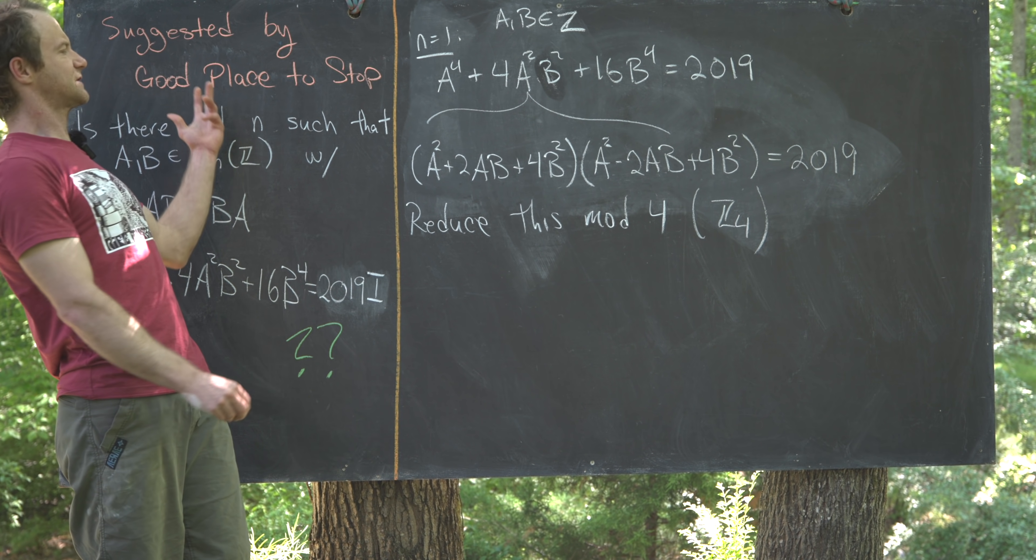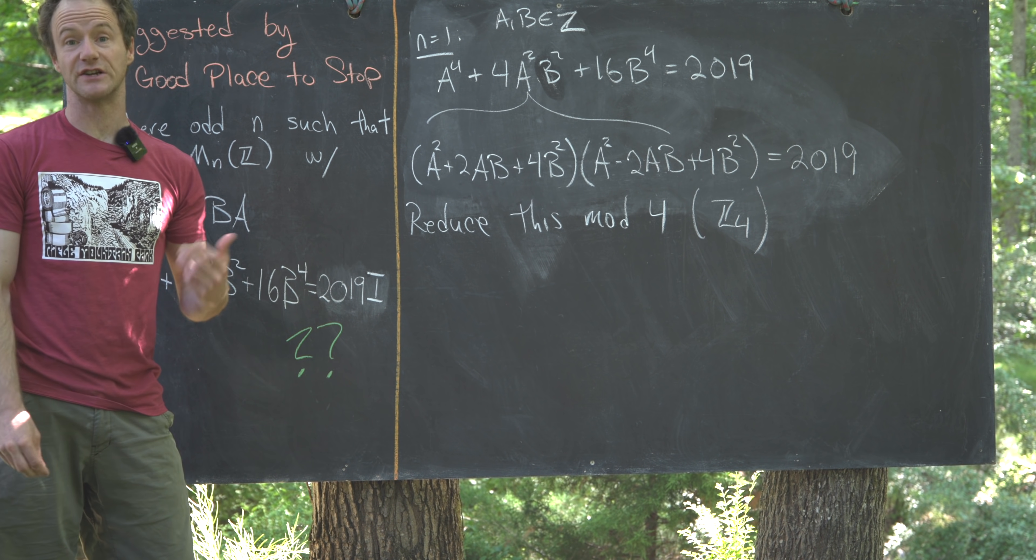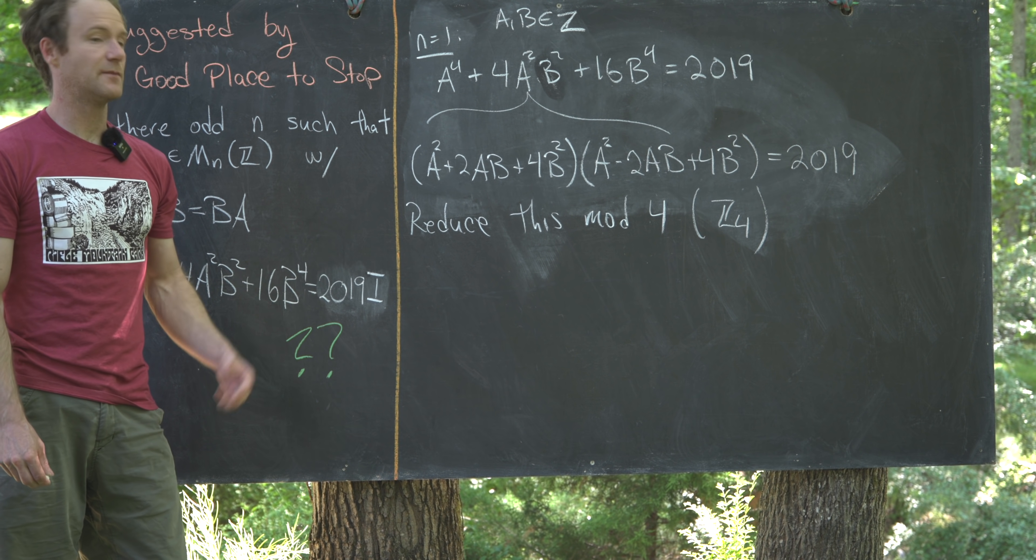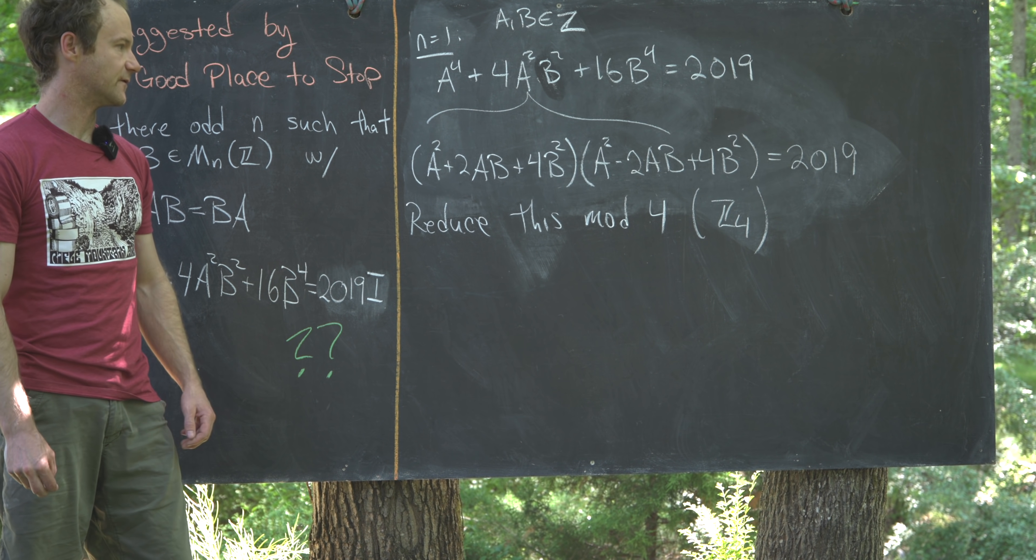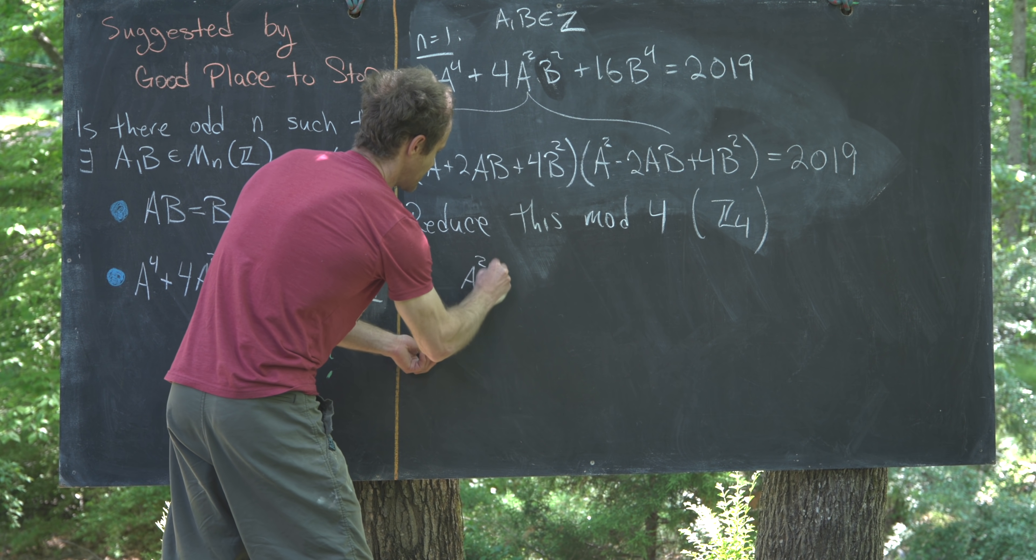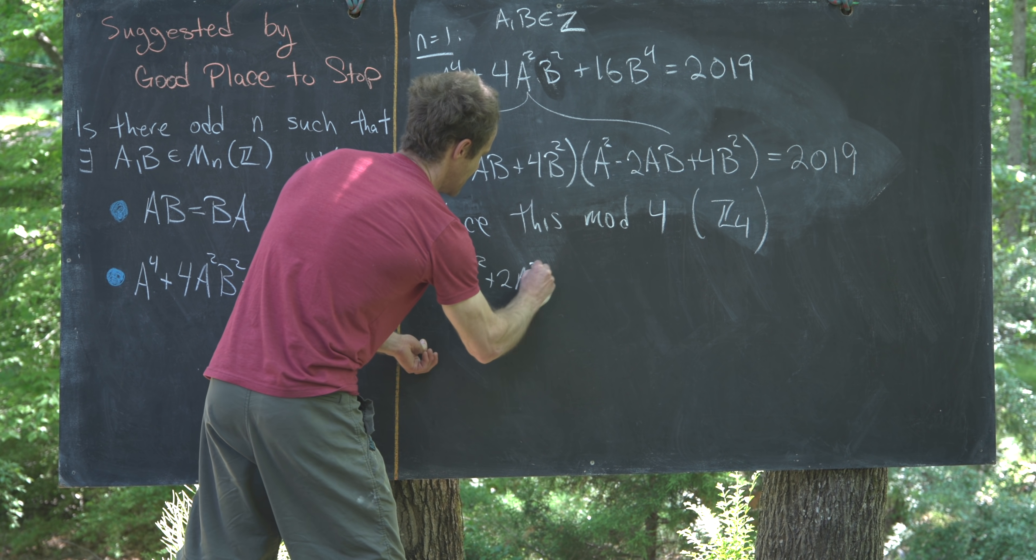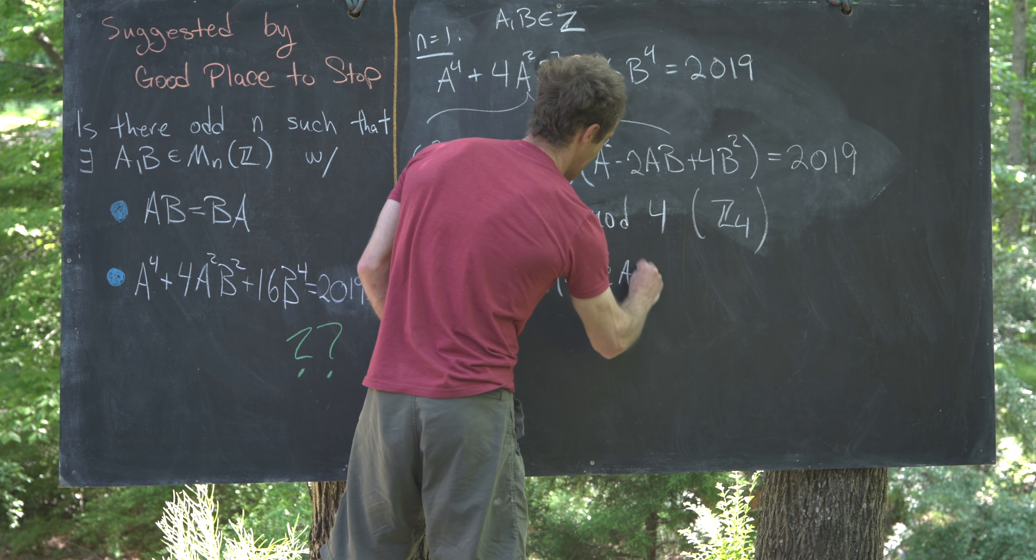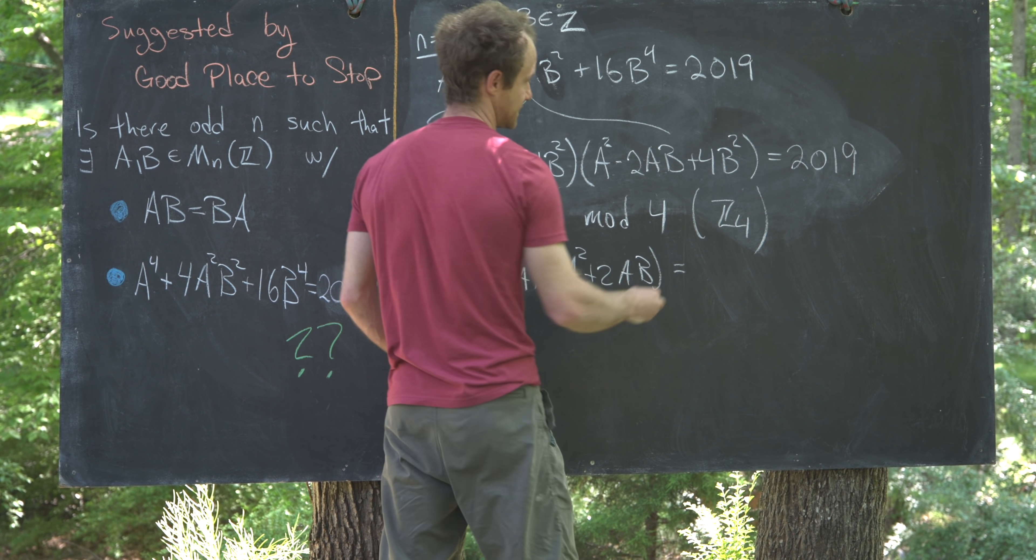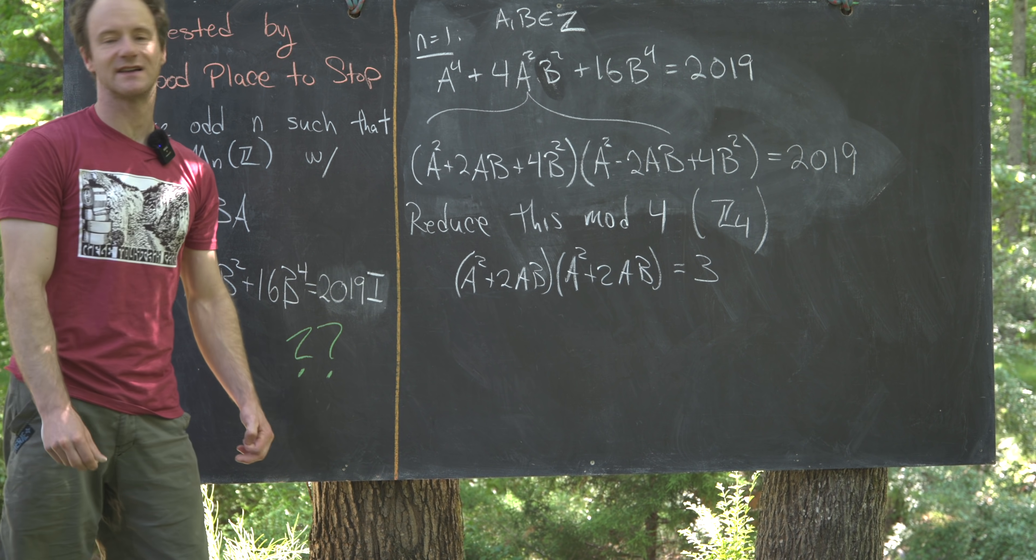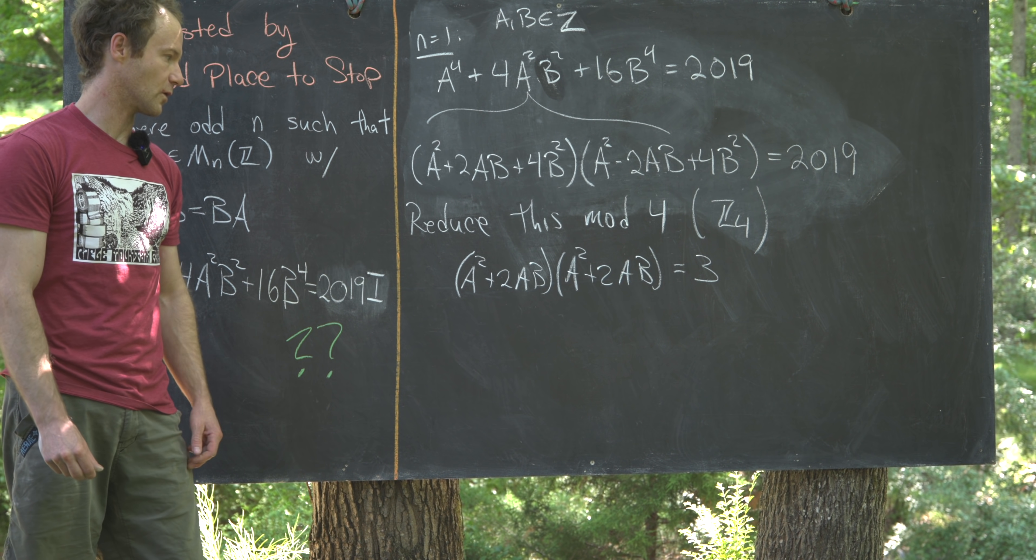And so this comes from, like, an undergraduate math contest, so it's likely that the competitors would know about the group Z4. So, let's see, in Z4, this turns into a squared plus 2ab times a squared plus 2ab equals 3. So you can check that that's 3 more than 2016, and 2016 is a multiple of 4.